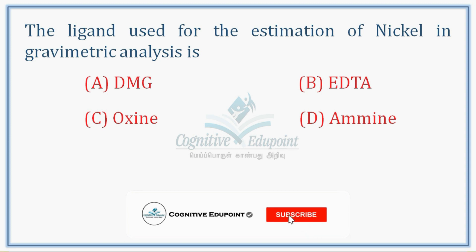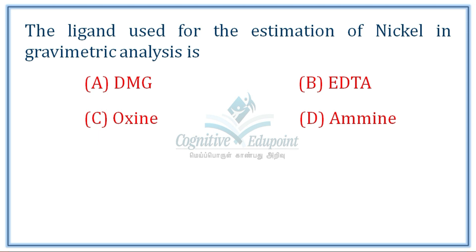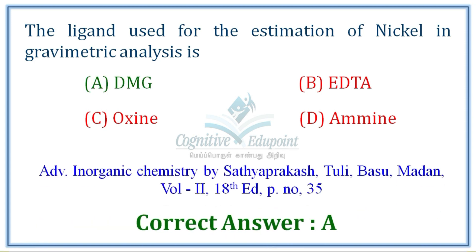Next question: the ligand used for the estimation of nickel in gravimetric analysis. The application of coordination chemistry here is dimethylglyoxime (DMG). The nickel-DMG complex is coloured and precipitates, making it useful for gravimetric estimation — a precipitate weight-based analysis. The correct answer is DMG. EDTA is useful for hardness estimation, and hydroxyquinoline is useful for aluminum.